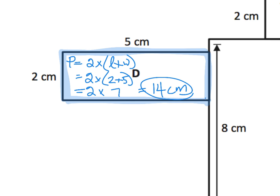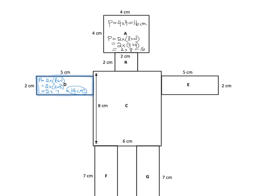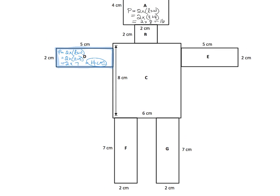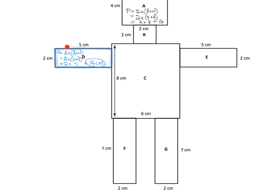Alright, so let's see. Let's zoom out. What else do we want to do? Oh, my goodness. Well, we know, interestingly enough, we can see that D and E are the same rectangle. So we already have the answer to E.